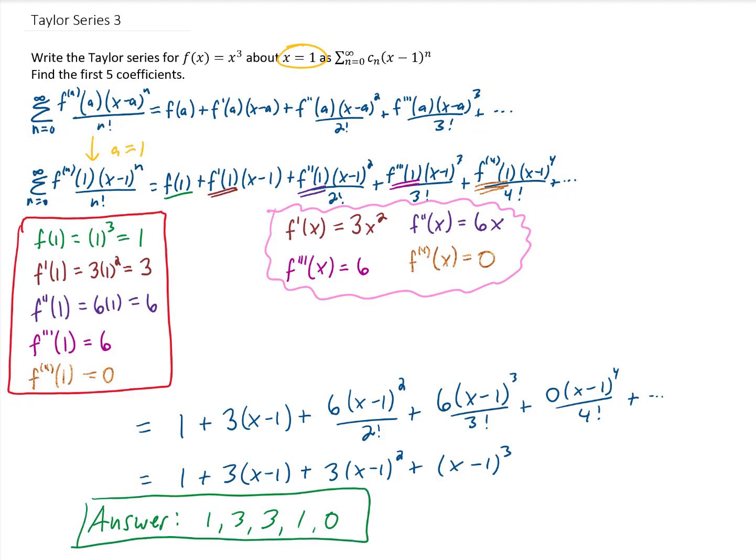Now the funny thing about this Taylor series down here is that if we multiply it all out, we're actually just going to get x cubed, our original function. And so we just found kind of a different way to write x cubed in the form of a Taylor series. So this might be kind of a silly example, but it gets you working with the process of calculating Taylor series. So I think that's the point. Let's find a Taylor series for a different function in the next video. I will see you there.